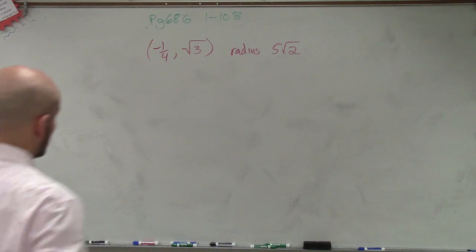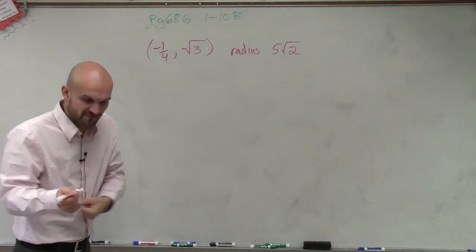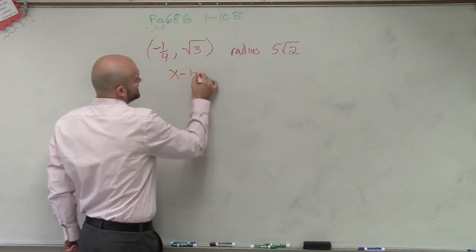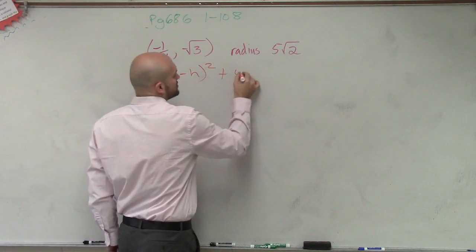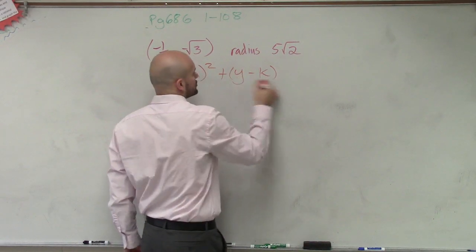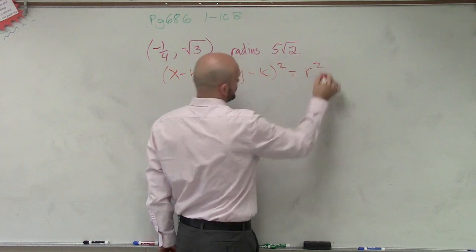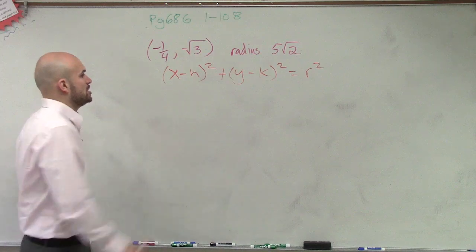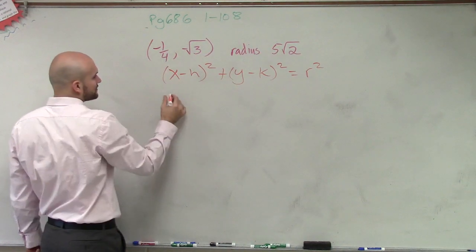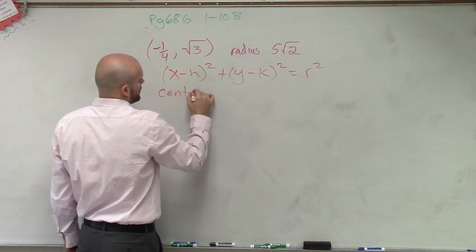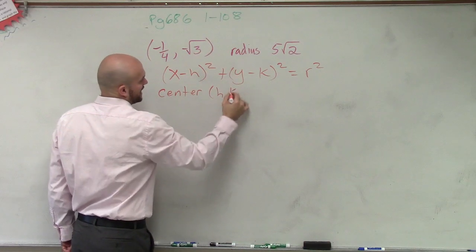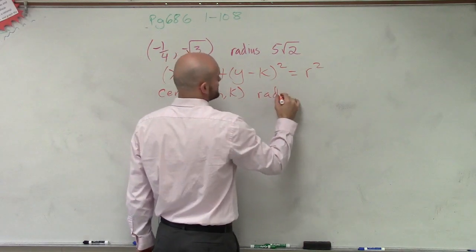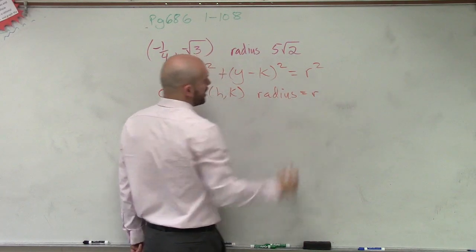So what we went over last class period, a circle we know comes in the form of x minus h squared plus y minus k squared equals r squared. And we know that the center is h comma k, and the radius is equal to r.